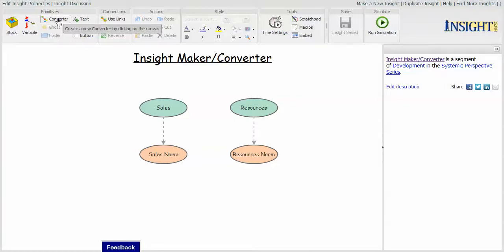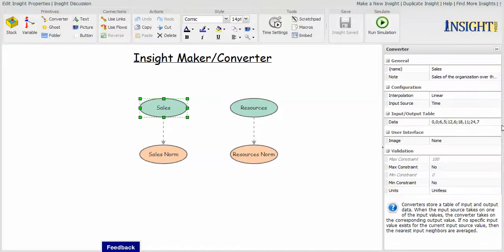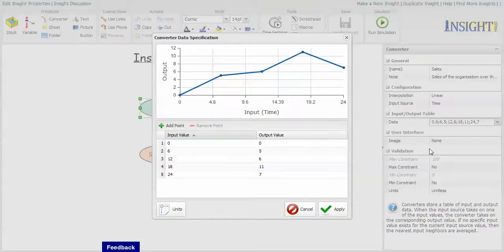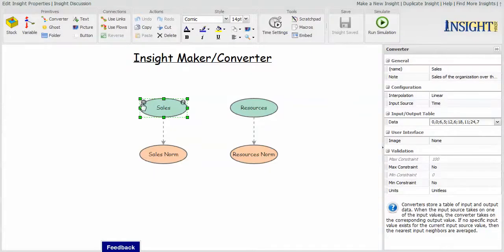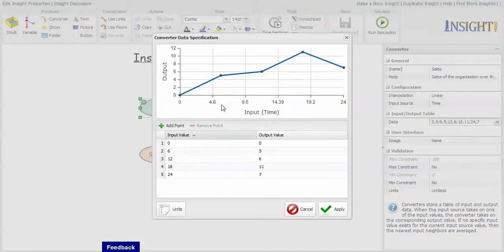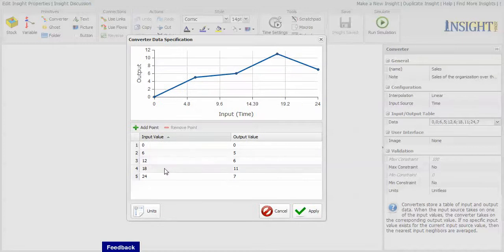The converter is a primitive that allows you to specify a set of values for a variable. It functions like a variable except you explicitly state the values of it. Once you create it, you can select to have it open the definition window, or you can select the equal sign on the side of it.